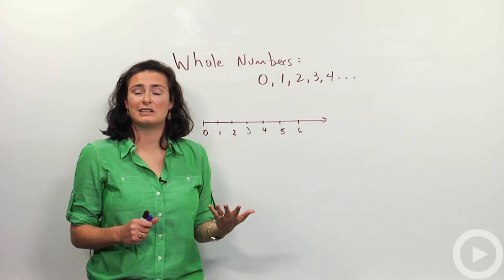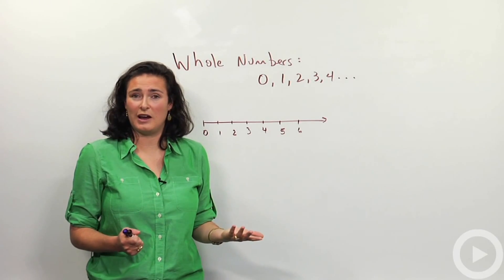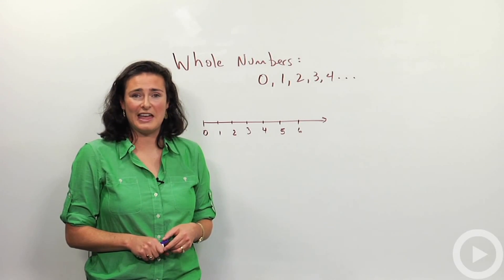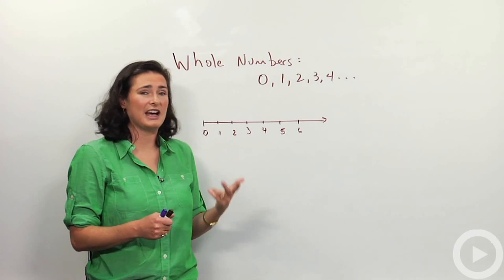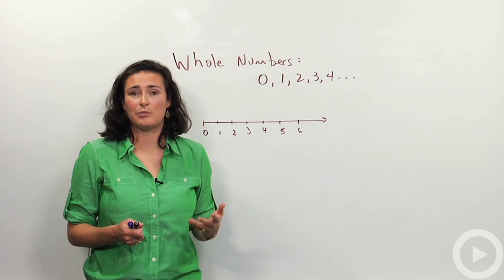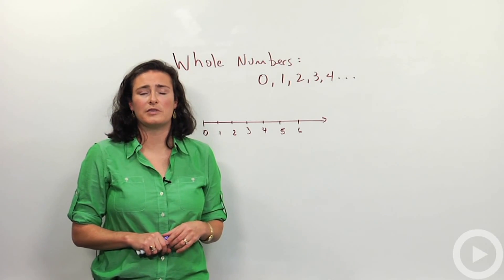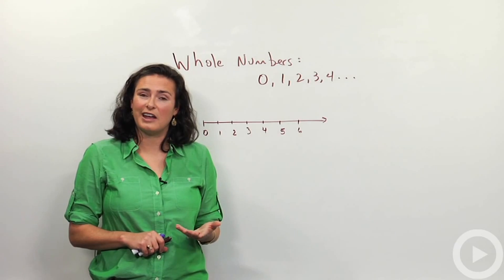I sometimes think of them as the counting numbers because usually when we're asked to count, we start at 0 or 1. And it's also if we are counting items, like if you're counting dollars, for example. You could count 0 dollars, 1 dollar, 2 dollars. That's what whole numbers are. You'll notice we're not talking about fractions or decimals.